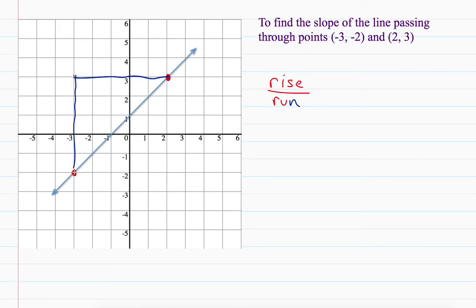Now, if you look here, if I start here, I went up 1, 2, 3, 4, 5 spaces. So my rise was 5. And then to run, to move to the right, I moved 1, 2, 3, 4, 5 spaces again, so my run is 5. Now hopefully you can see that looking at this fraction 5 over 5 is equal to 1. So the slope in this case, which is referred to as the m, is equal to a positive 1.